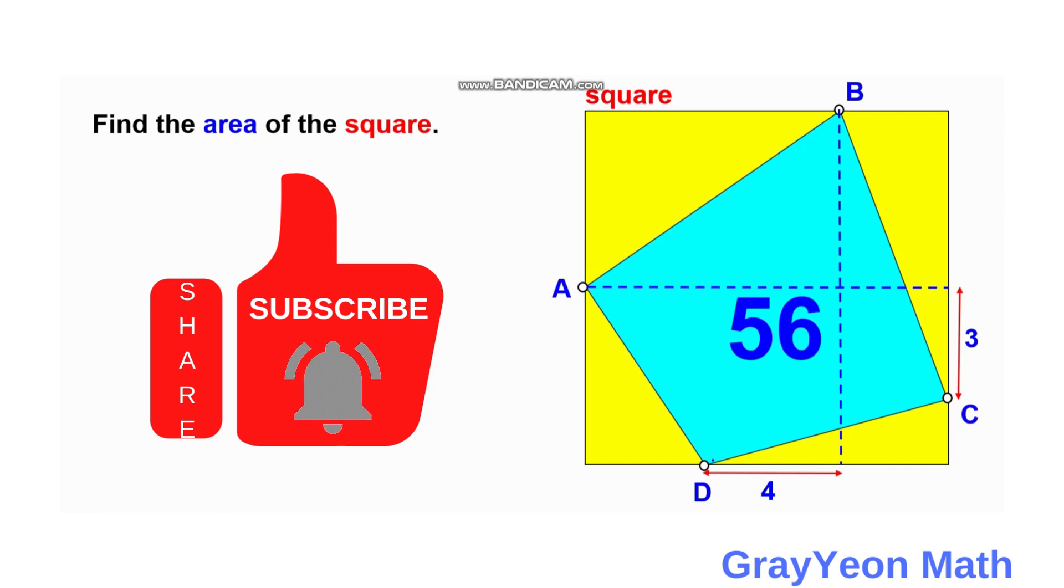We have a quadrilateral inside a square, a yellow square, and a blue quadrilateral ABCD.